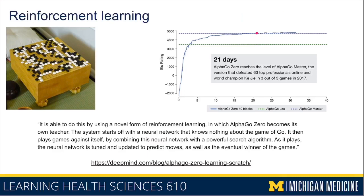They were training this algorithm for days on end — at day zero it had a very poor rating, and about three days into training it was able to perform fairly well. After 21 days of training, it was able to beat 60 top professionals and beat a world champion in three out of three games in 2017.